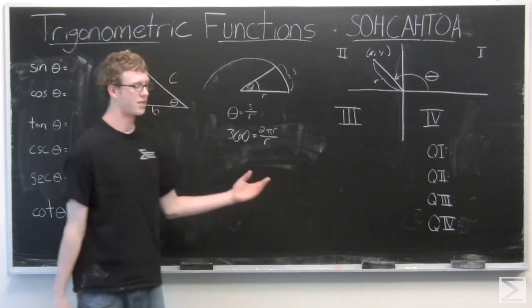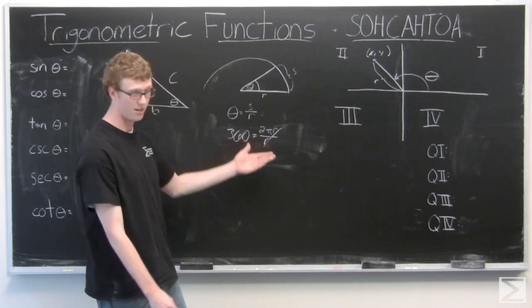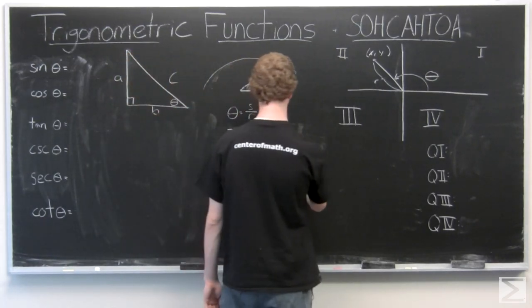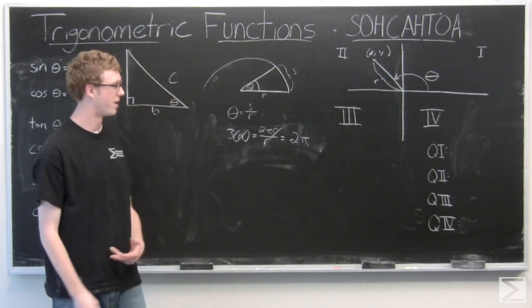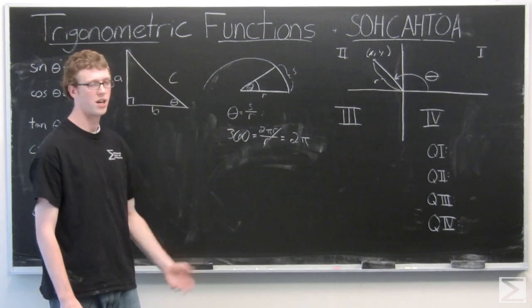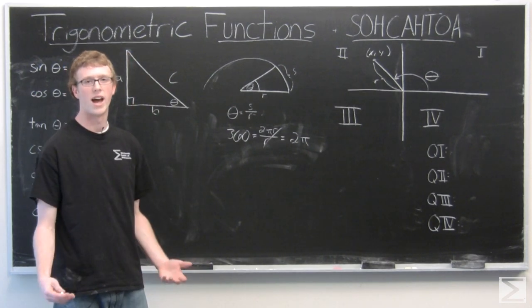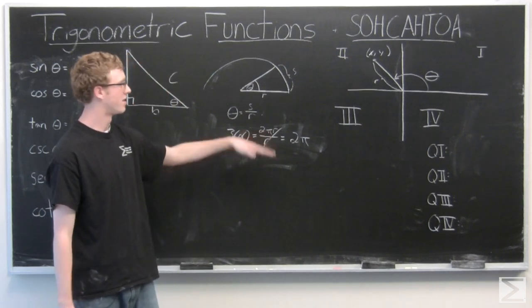So we have 360 degrees equals 2 pi r over r. We can just cancel the r's and we get 360 degrees equals 2 pi radians. Now we could write units for the radians, but typically when you see radians written out, you won't see units. If you do, it would be rad or radians all written out. So we have 360 equals 2 pi radians.